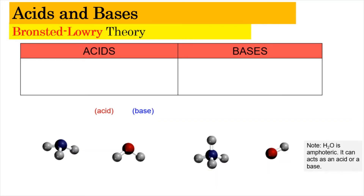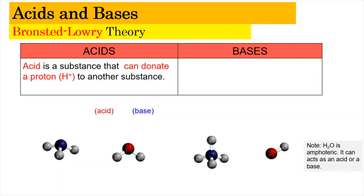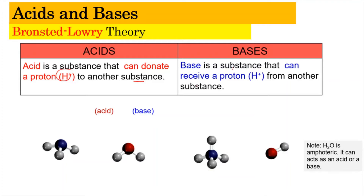Next, we look into the Bronsted-Lowry Theory. According to Bronsted-Lowry, acids are substances that donate a proton to another substance, while bases receive a proton from another substance. For example, HCl acts as an acid, and water is a special case — it can act as either an acid or a base. Because HCl is the acid, water automatically becomes the base. The acid donates its hydrogen so that H₂O forms H₃O⁺, and as a result, Cl⁻ is produced.